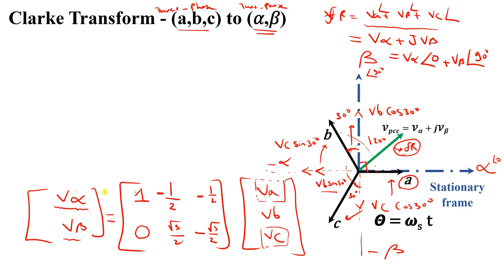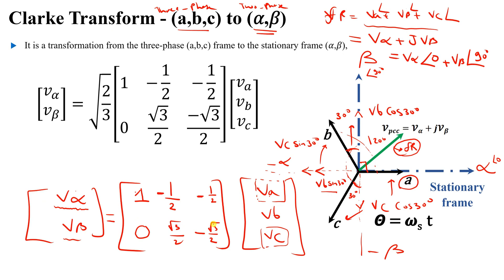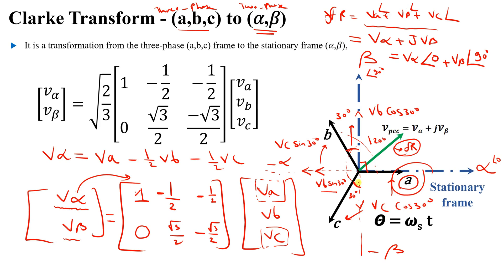To transform from ABC to alpha-beta, multiply by the matrix: [1, −1/2, −1/2 ; 0, √3/2, −√3/2] applied to [V_a, V_b, V_c]. So V_alpha = 1·V_a − (1/2)·V_b − (1/2)·V_c, and V_beta = 0·V_a + (√3/2)·V_b − (√3/2)·V_c.